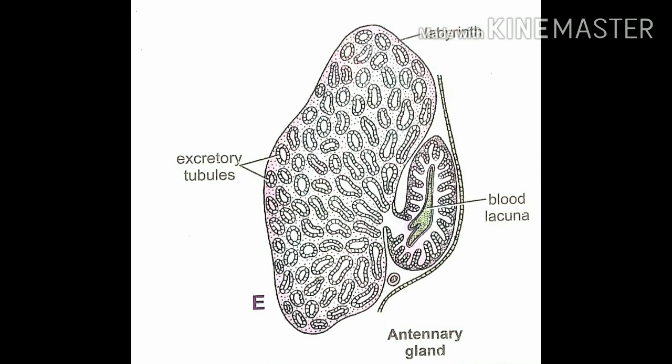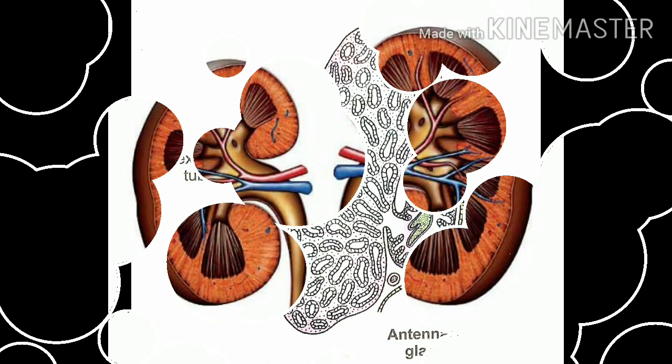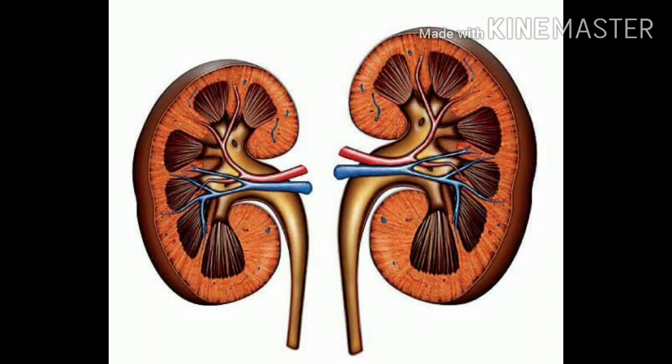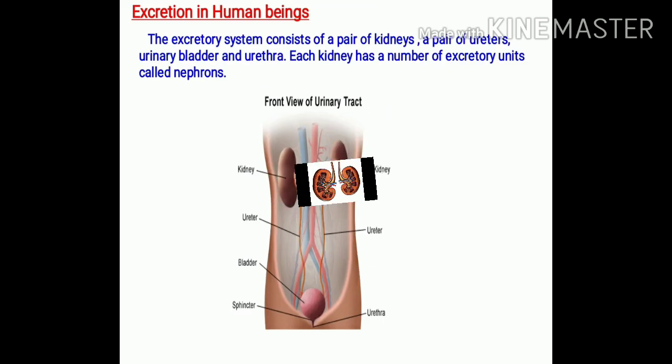Now in case of vertebrates, including mammals, kidneys are the main excretory organs. So let us understand excretion in human beings.